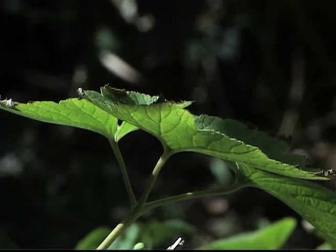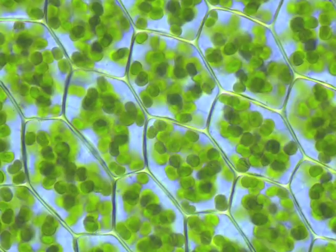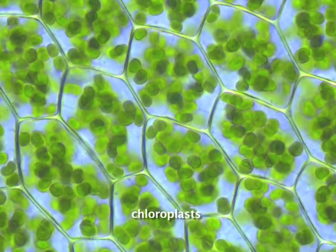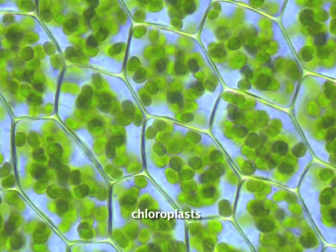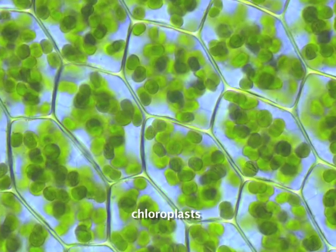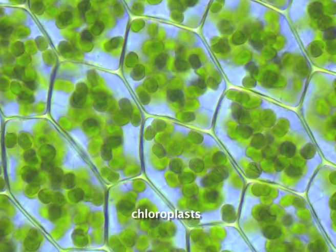Light energy is captured in a very specific place. Most of the leaf's inner cells contain structures called chloroplasts. We can see chloroplasts here clearly, the green oval-shaped organelles.